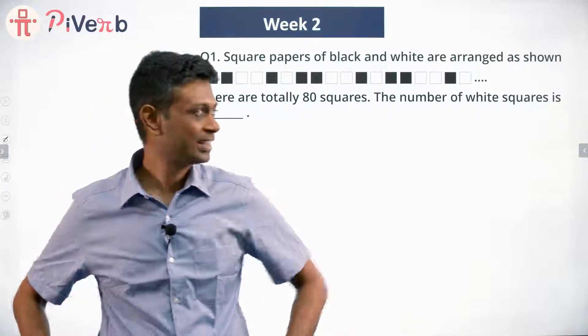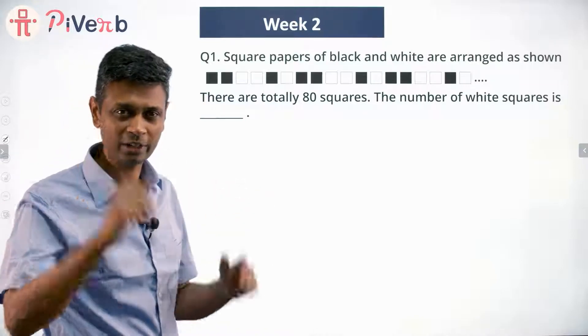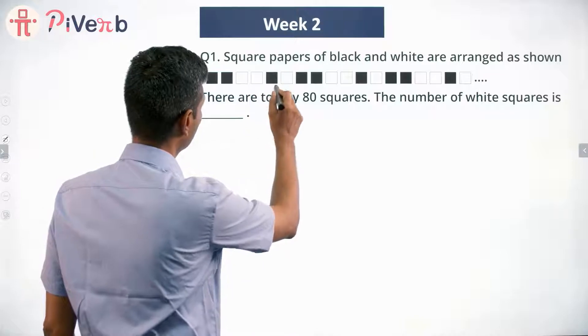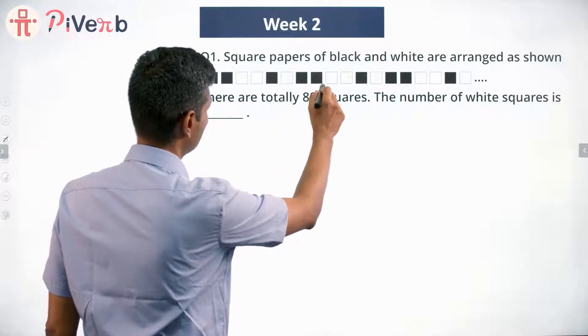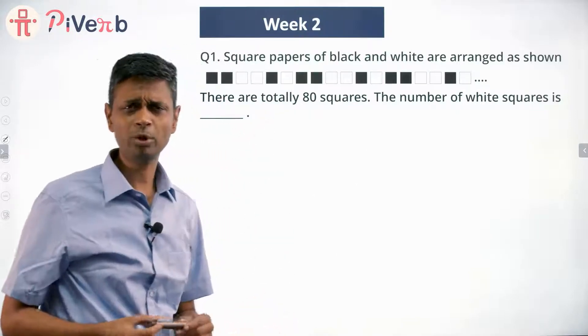If you've done third standard or fourth standard level, you can answer this question. So let's try this one. The first step for us is to find the pattern. So two black squares, two white squares, one black square, one white square, two black squares, two white squares, one black, one white, two, two, one, one.